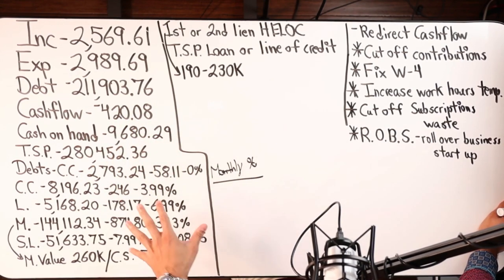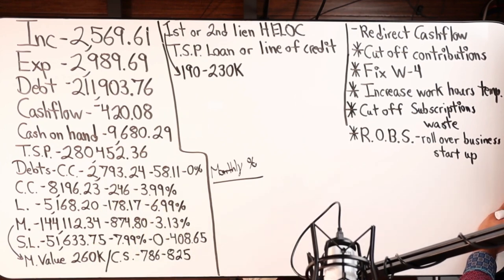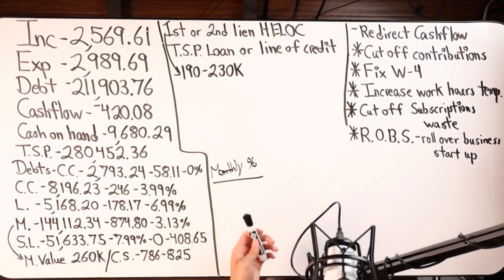The only limitation I see with them getting approved for a first lien HELOC is their income being low — the DTI — although they have great credit. You can't just go to one bank. We want to be calling banks, local credit unions, having conversations, sitting down at the branch. Ask: what are your requirements for a first lien HELOC, second lien HELOC, credit card, personal line of credit — whatever it is? What do you need to see? Do I need to have a relationship with you first?